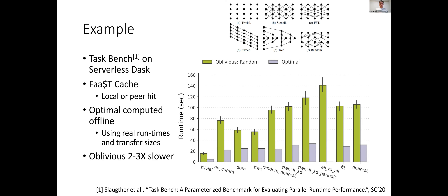Our serverless version of Dask we call 'oblivious' because every invocation goes to a random instance. 'Optimal' is our best case. There's a huge gap: it's at least two to three times slower to run on the same machines with this oblivious placement that knows nothing about locality, versus optimal which tries to minimize network data transfers and maximize parallelism.